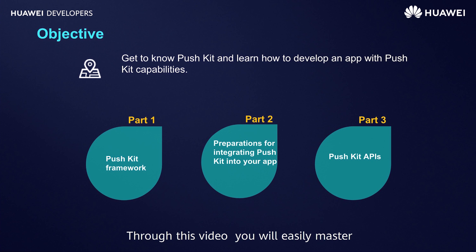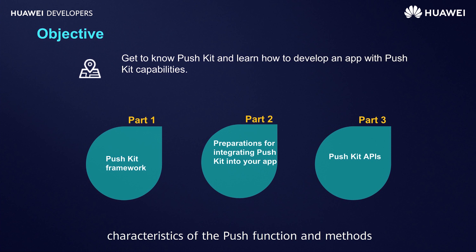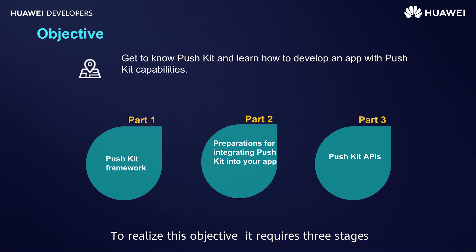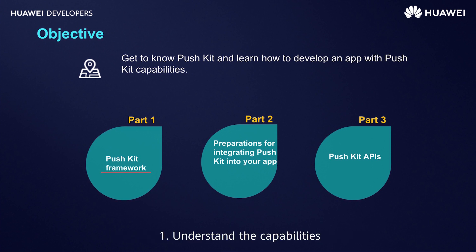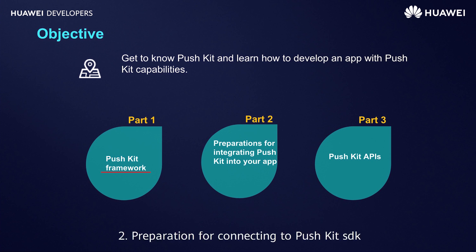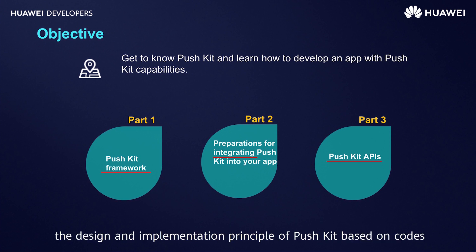Through this video, you will easily master the implementation principle, capability, and characteristics of the push function, and methods to quickly access and use the service in your apps. To realize this objective, it requires three stages: 1. Understand the capabilities, characteristics, and framework of PushKit. 2. Preparation for connecting to PushKit SDK. 3. Through the explanation of Key PushKit interfaces, to help developers understand the design and implementation principle of PushKit based on codes.